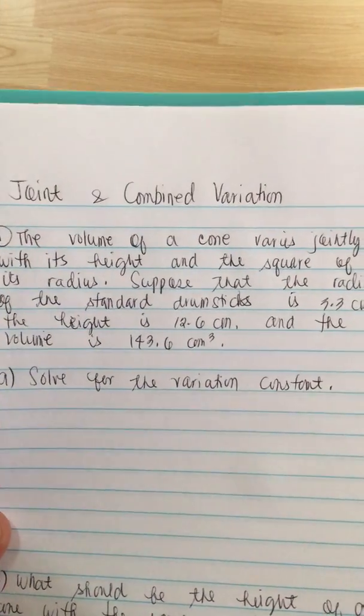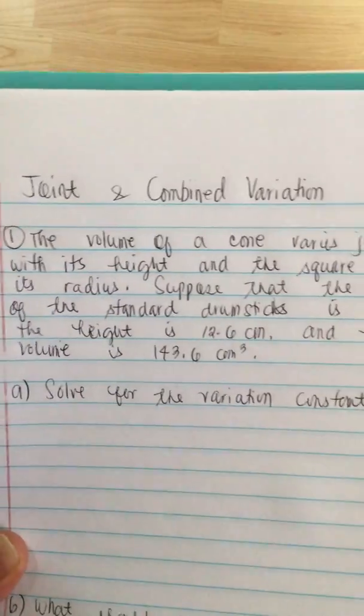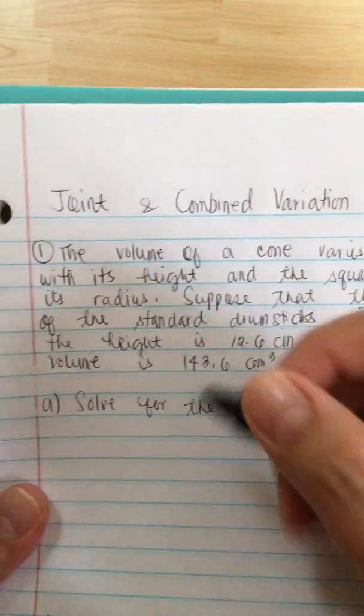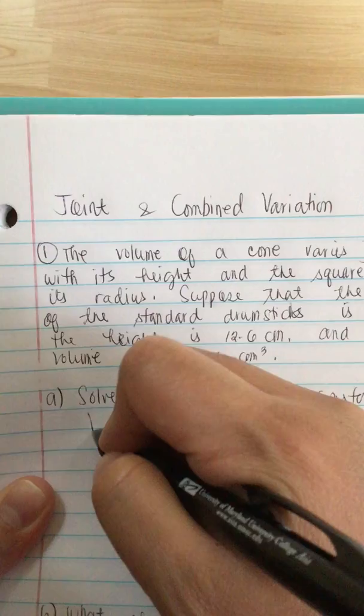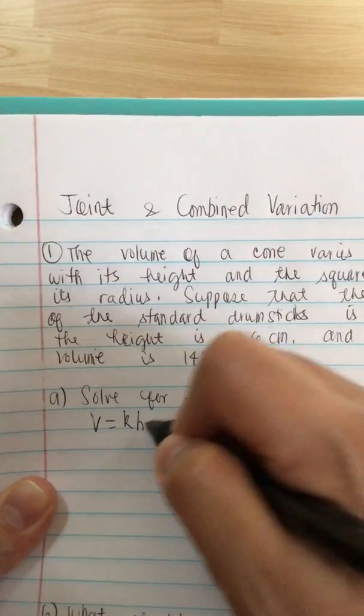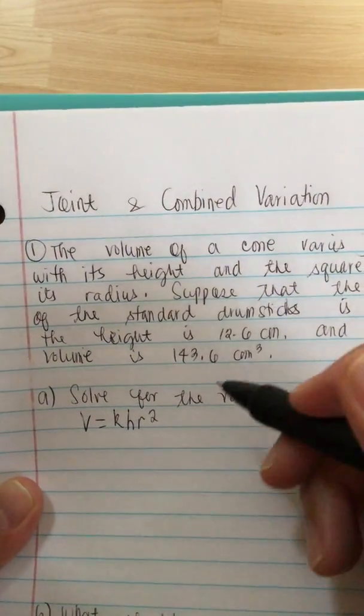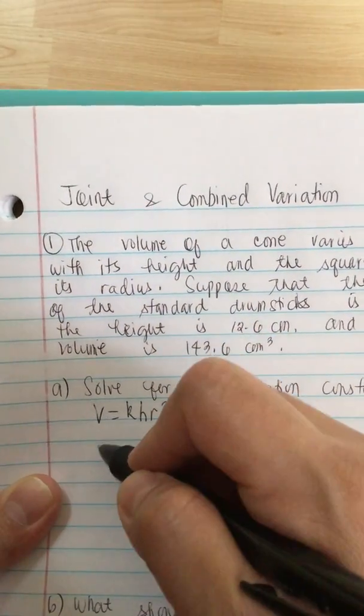Now A, solve for the variation constant. So we have the formula V is equal to K times the height times the radius squared. So now we solve for K.